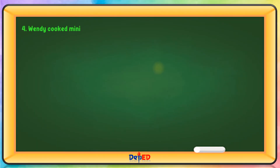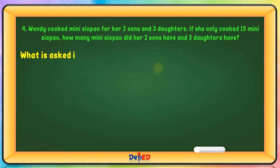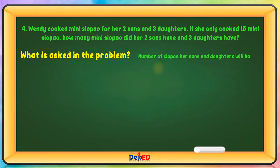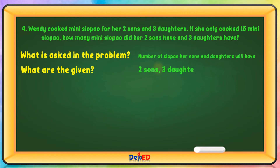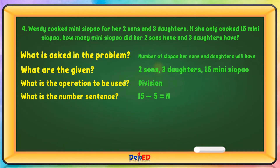Wendy cooked mini siopao for her two sons and three daughters. If she only cooked 15 mini siopao, how many mini siopao did each of her two sons and three daughters have? What is asked in the problem? Number of siopao her sons and daughters will have. What are the given? Two sons, three daughters, and 15 mini siopao. What is the operation to be used? Division. What is the number sentence? 15 divided by 5 equals N. Let us solve: 15 divided by 5 equals 3.